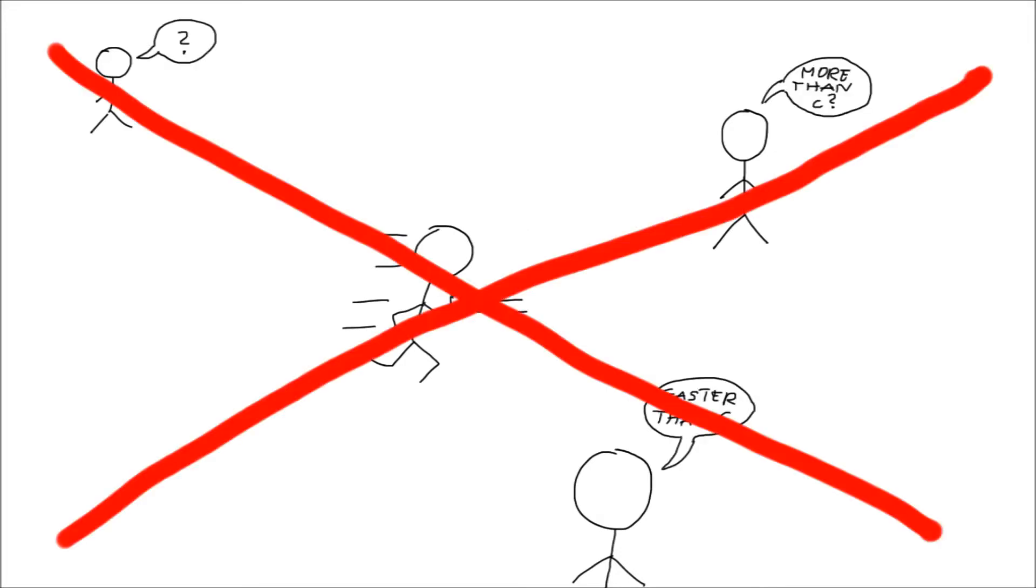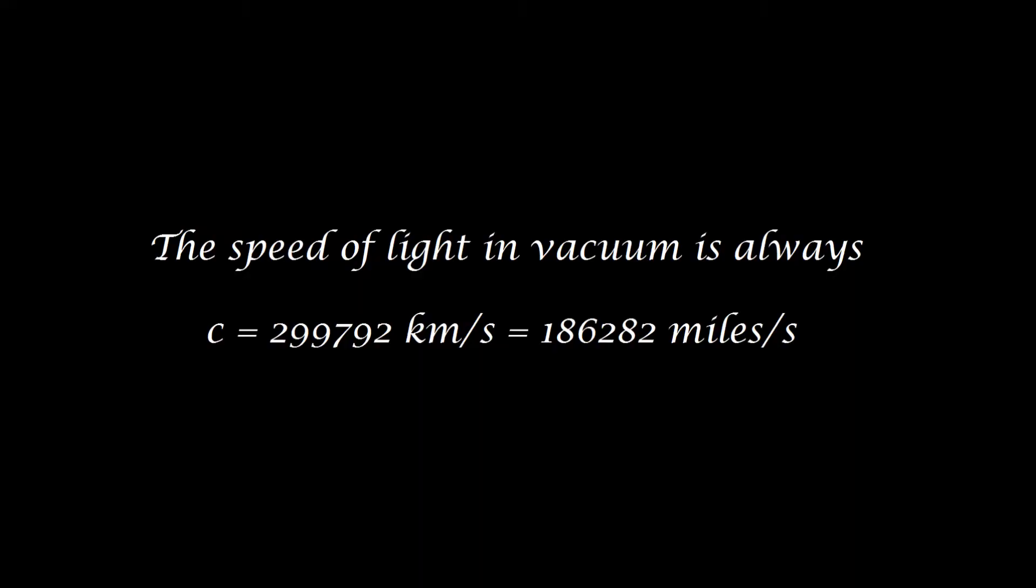This intuition is incorrect. Physicists made a lot of experiments and concluded that the speed of light is the same for all observers, whether they are moving or not, and whether the source of light is moving or not.